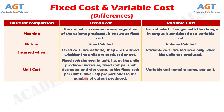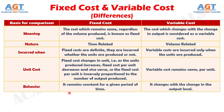Number four: fixed cost changes per unit — that is, as the units produced increases, fixed cost per unit decreases and vice versa, so the fixed cost per unit is inversely proportional to the number of output produced, whereas variable cost remains the same per unit. Number five: fixed cost remains constant for a given period of time, whereas variable cost changes with the change in the output level.